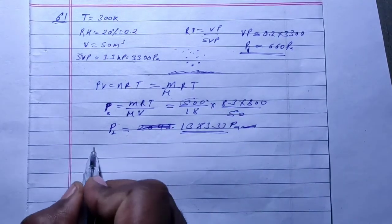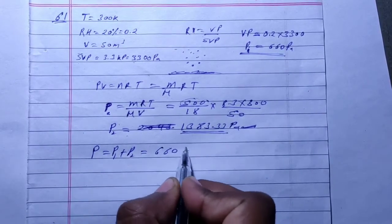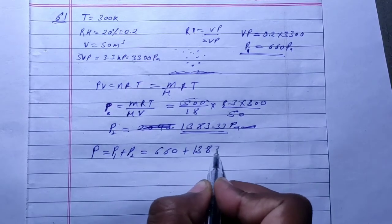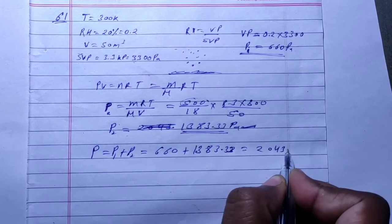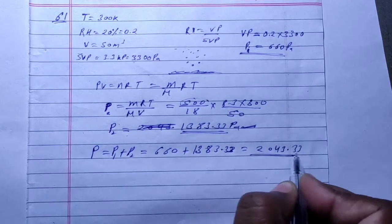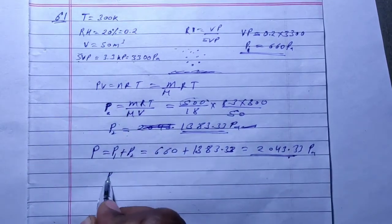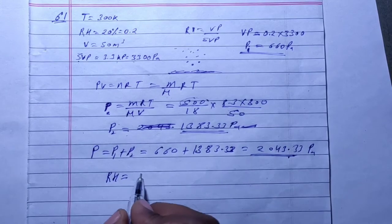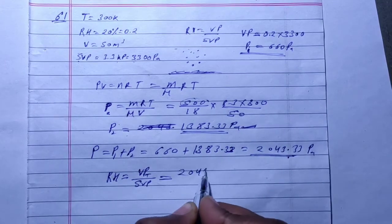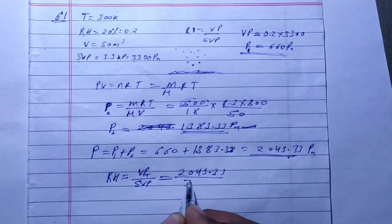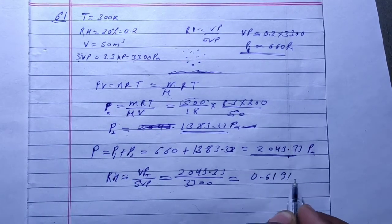The total pressure, total vapor pressure is P1 plus P2 equals 2043.33 Pascal. Now you have total vapor pressure and saturation vapor pressure. Relative humidity is total vapor pressure upon saturation vapor pressure, which is 2043.33 divided by 3300, which equals 0.6191.